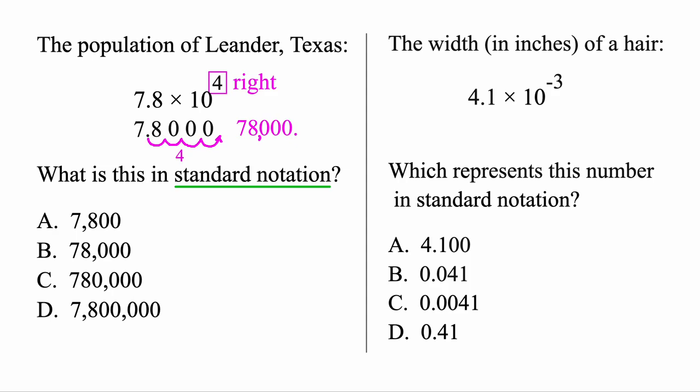It's just 78,000. You could go ahead and put a comma right here if you want. So 78,000, that's the population of Leander, Texas here. So that is the final answer. And again, this is written in standard notation. The original is written in scientific notation.